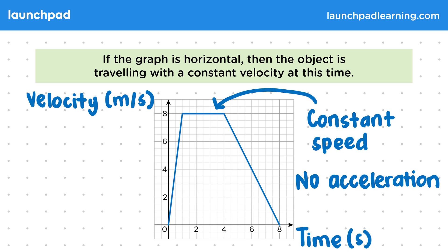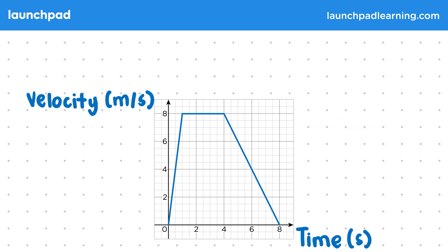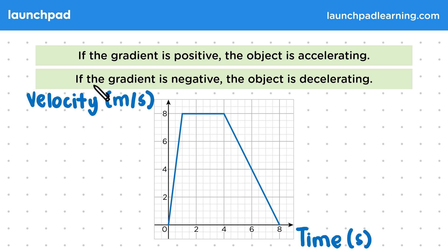Now remember that we can have accelerations for increasing velocities and decelerations for decreasing velocities. So how do we show this on the graph? If the gradient is positive, the object is accelerating. Whereas if the gradient is negative, the object is decelerating.